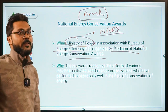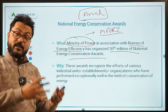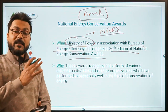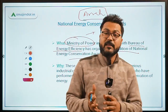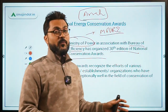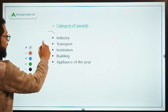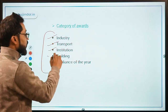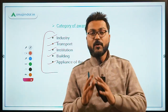The Ministry of Power in association with the Bureau of Energy Efficiency organized the 30th edition of National Energy Conservation Awards 2020. These awards are given to recognize the efforts of industries, organizations, and institutions in the field of the energy sector. The five categories under which these awards are given are: industry, transport, institution, building, and appliance of the year. There are various other subcategories as well.